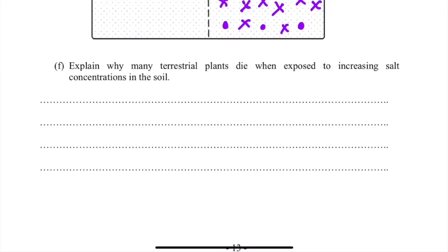The next part of the question asks us to explain why many terrestrial plants die when exposed to increasing salt concentrations in soil. So this increasing salt means that there's the formation of a hypotonic solution because there's high concentration of salt, low concentration of water outside the plant root, and there's high concentration of water inside. So the water is going to move from high to low across the concentration gradient.